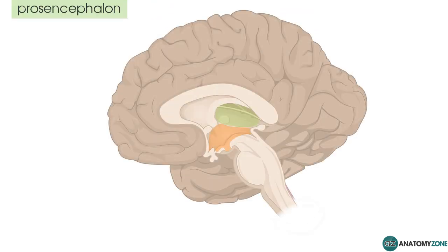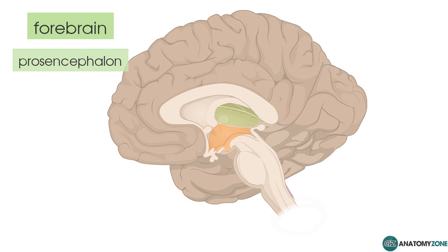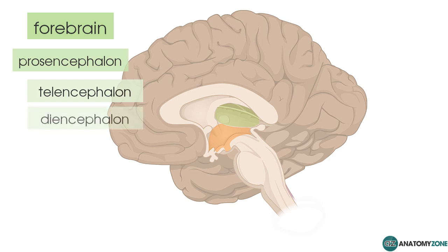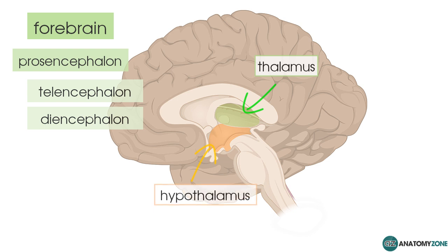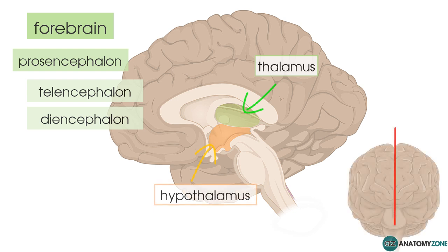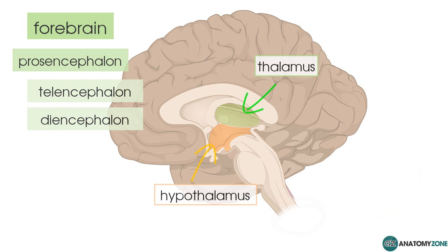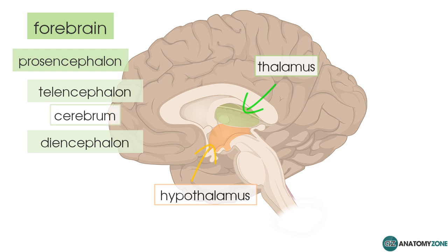Now we come to the forebrain, known as the prosencephalon, which has two parts: the telencephalon and the diencephalon. Looking at the diencephalon here, in light green you have the thalamus and in orange you have the hypothalamus. This is a sagittal section through the middle of the brain. The telencephalon is essentially the cerebrum, encompassing the cerebral cortex and subcortical structures like the basal ganglia, the hippocampus, and the amygdala, outlined here in red.